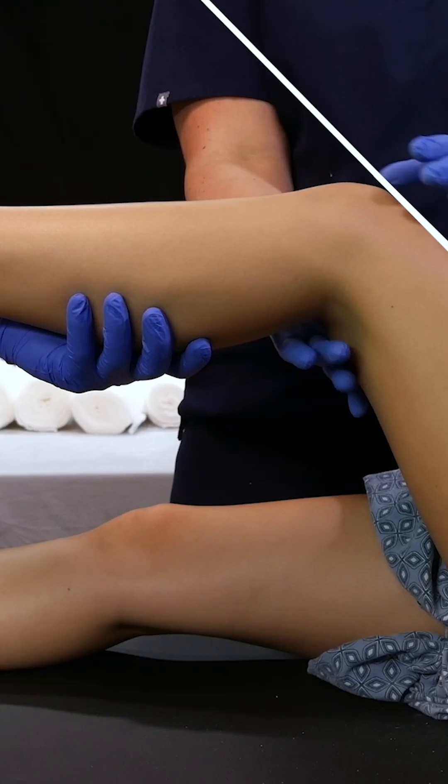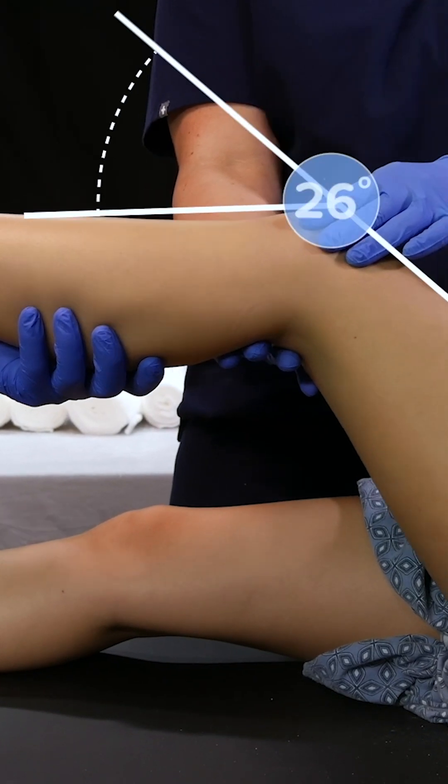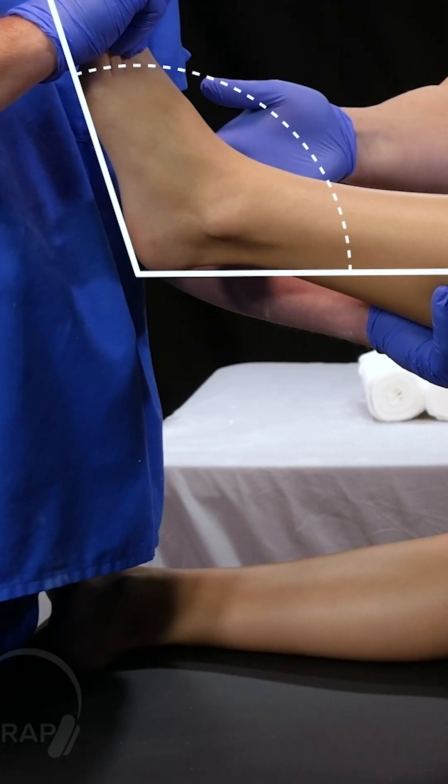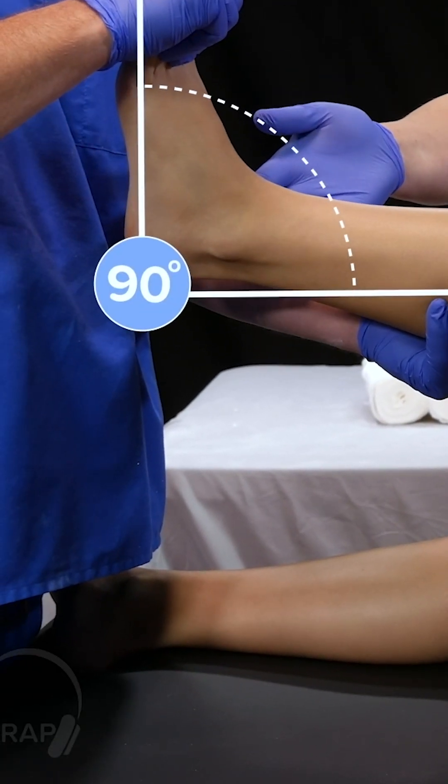Let's review a posterior long leg splint. The knee is going to be at 10 to 20 degrees of flexion. The ankles are going to be at 90 degrees. And you can use this for many injuries.